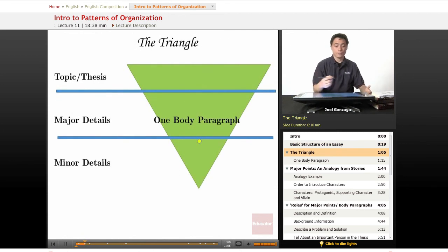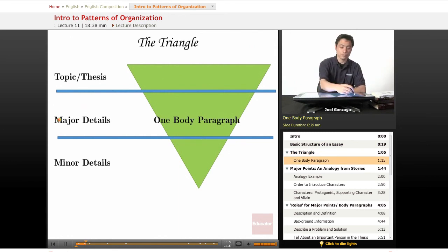Now, we already know what the topic and the thesis are, and we also know what major details are, but what does that correspond to in an essay? Well, normally, if you've got a major detail, it's normally exactly one per each body paragraph.